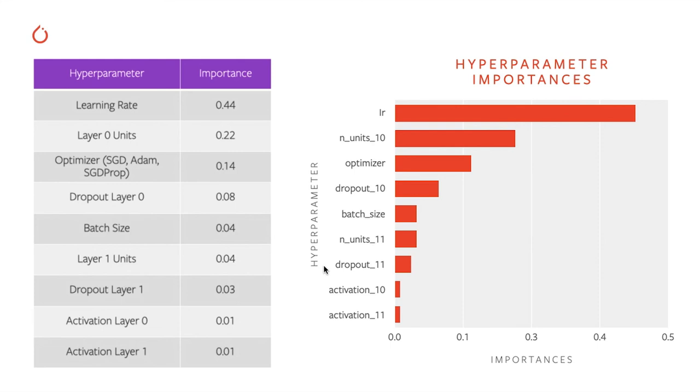But again, this is not as important as the number of units in the first layer. And then beyond that, we see the dropout layer in the first layer is also one of the important hyperparameters and other hyperparameters are less so.